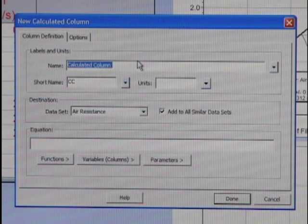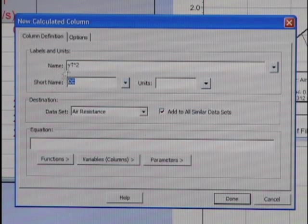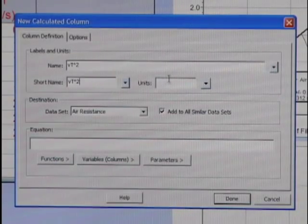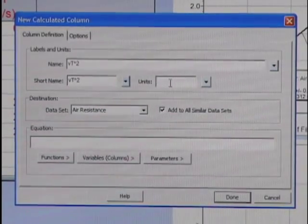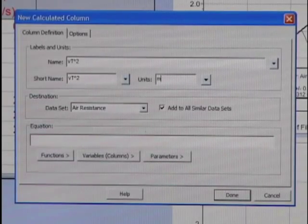So let me call this column velocity terminal, the terminal velocity squared, and I'm going to give it just the same short name.